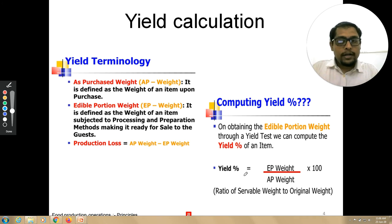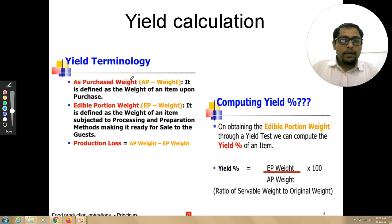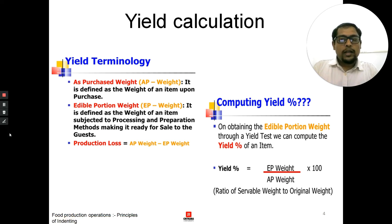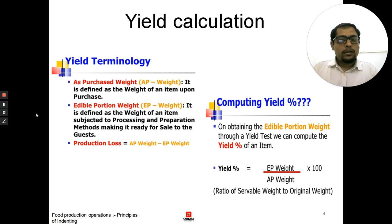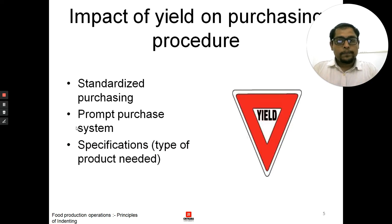There is definitely a product loss. How can we calculate the product loss? The product loss is AP weight minus EP weight. AP weight is 10 and EP weight is 6, so 10 minus 6 gives us 4 kg of product loss. This is how we calculate the yield — we get both a percentage of yield and the product loss quantity.